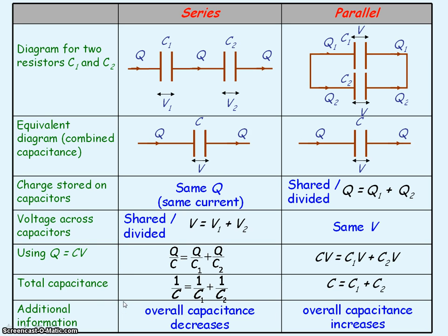If you remember from AS, where we have resistors connected in series and in parallel, we are doing the opposite to find the total capacitance. Connecting resistors in series, we add the overall resistances, and connecting resistors in parallel, we add the reciprocals of the resistances. So we're doing the opposite: capacitors in series is like resistors in parallel, and capacitors in parallel is like resistors in series.